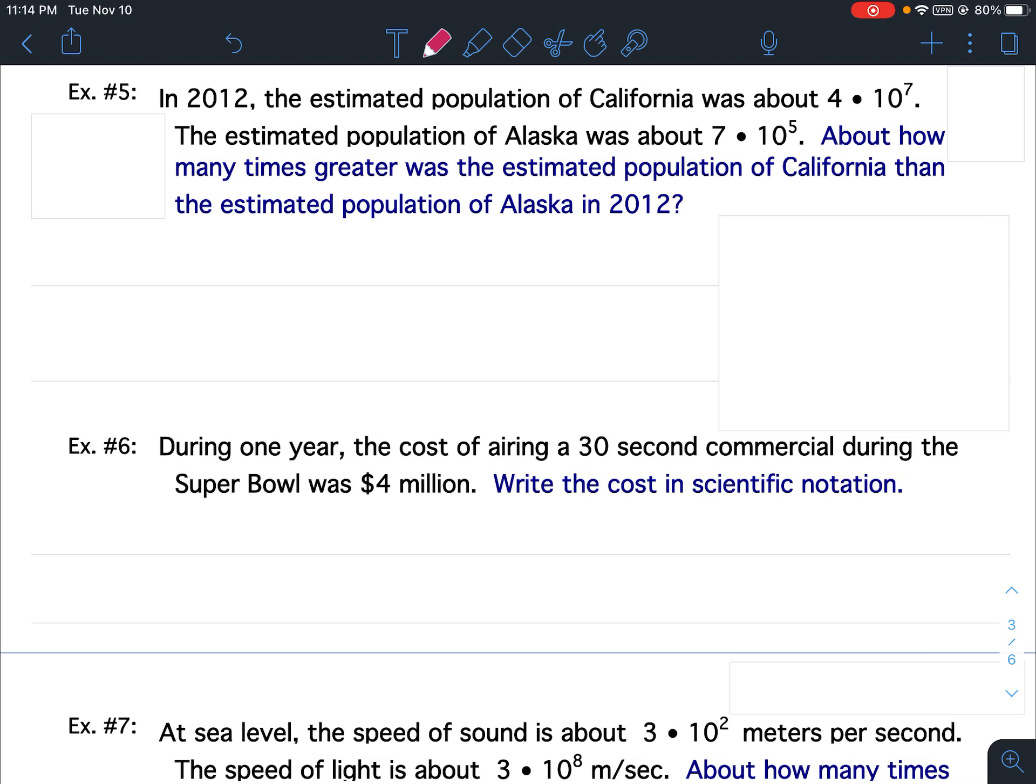Well, they're telling us by the question that California is more populated than Alaska. You know anything about geography, Alaska, the landmass, is much greater than California. But California is heavily populated compared to Alaska.